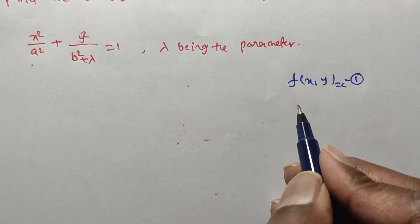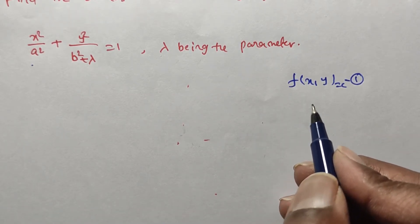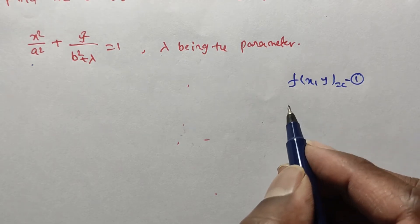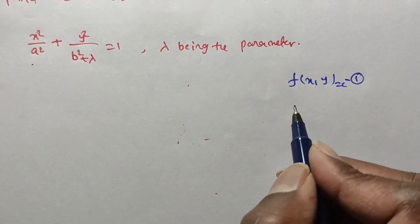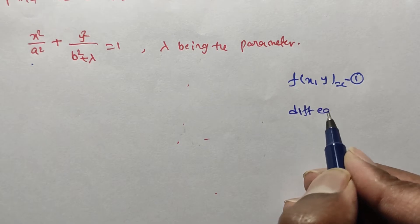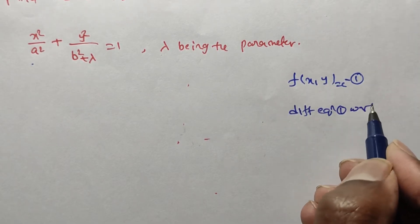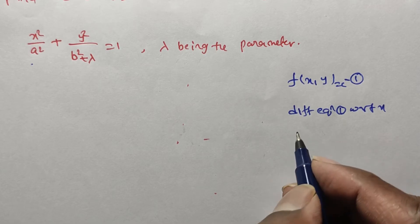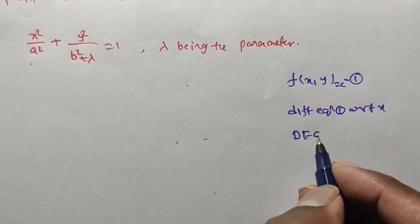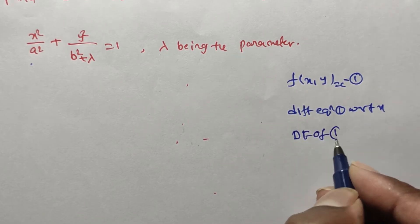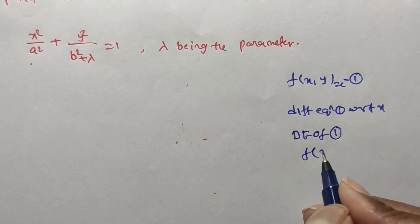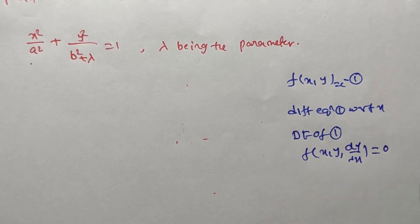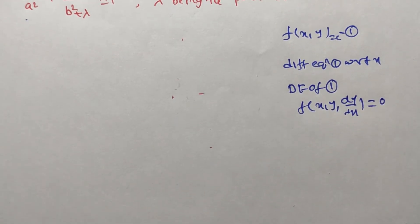Here c is an arbitrary constant. First, we have to form a differential equation. For that, we differentiate equation 1 with respect to x and eliminate the parameter. You will get a differential equation: f(x, y, dy/dx) = 0. This is called the differential equation of equation 1.